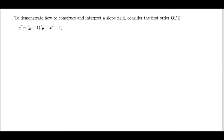To demonstrate how a slope field works, let's look at this first example. The differential equation is y prime equals (y + 1) times the quantity (y - x² - 1). The fundamental idea that drives the construction of a slope field is that a y prime term, a first derivative, indicates the slope of the solutions. As such, I can manipulate my first order differential equation to identify more specific information about slopes of solutions.